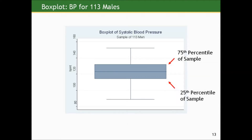The upper side of the box gives what's called the 75th percentile of the sample, and the lower side gives the 25th percentile. The median is the 50th percentile. The 75th percentile is the value that cuts off 75% to the left and 25% to the right — or equivalently, the middle value between the median and the largest value. Similarly, the 25th percentile cuts off 25% to the left and 75% to the right, or is the middle value between the lowest value and the median.